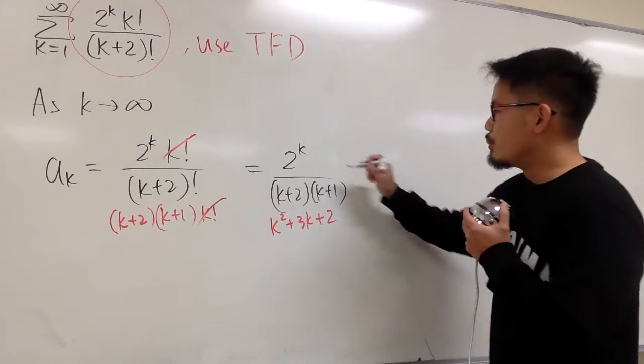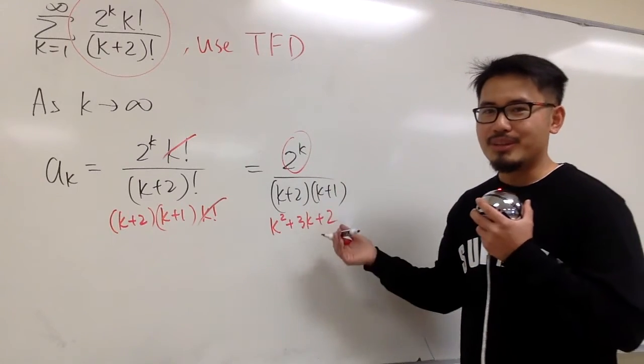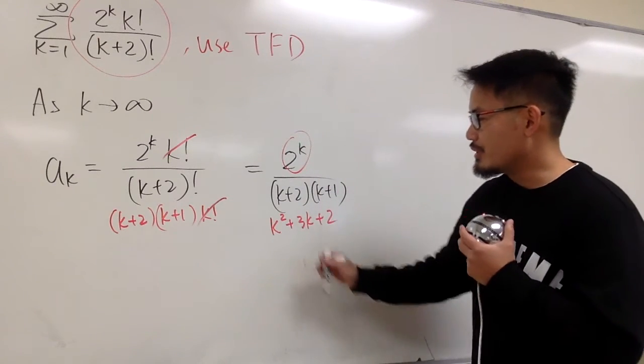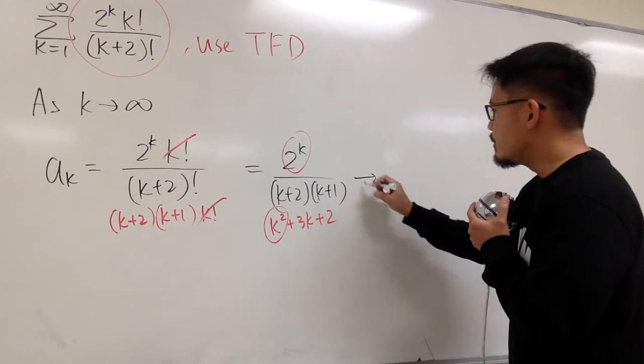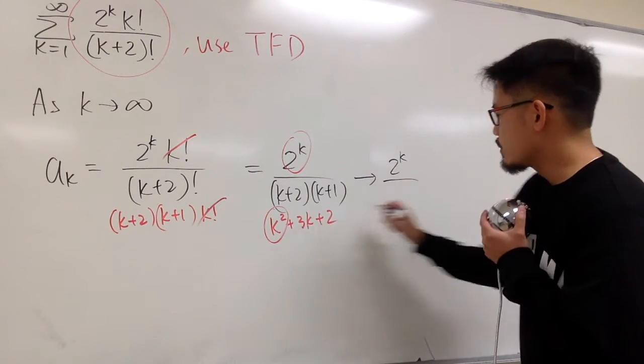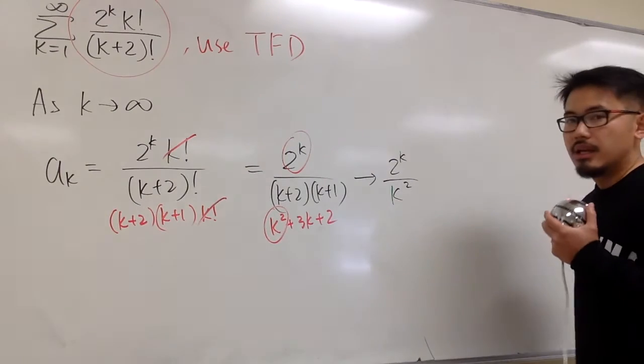On the top, you pretty much just care about the only thing that you have, which is 2 to the k. On the bottom, you only care about k squared. This is going to be approaching to 2 to the k over k squared.